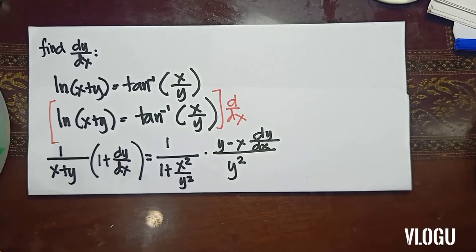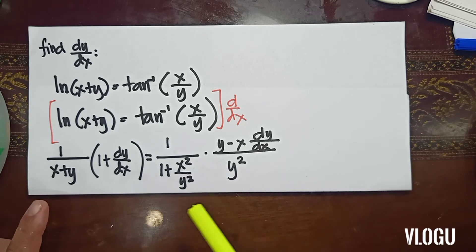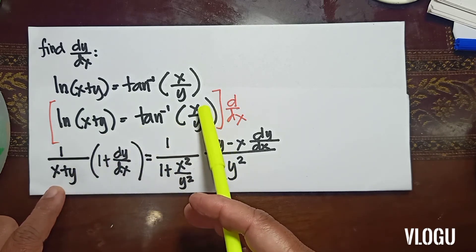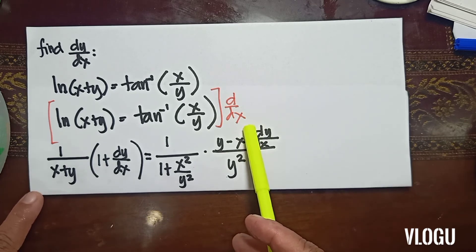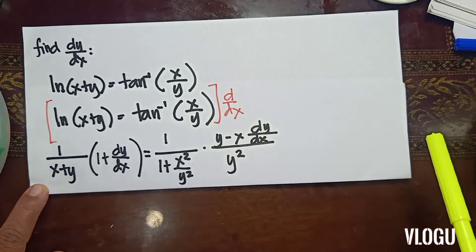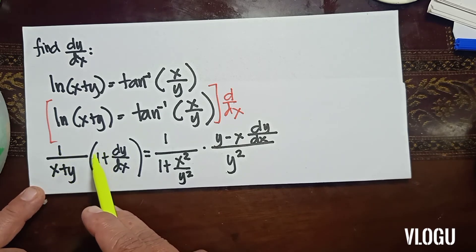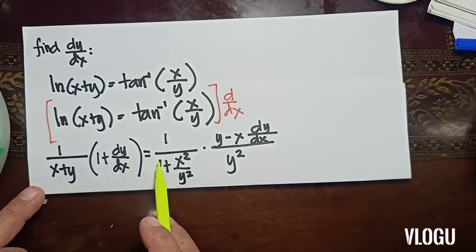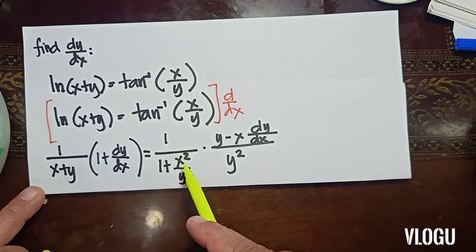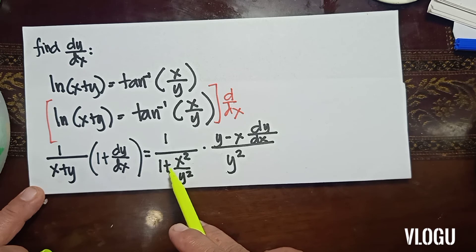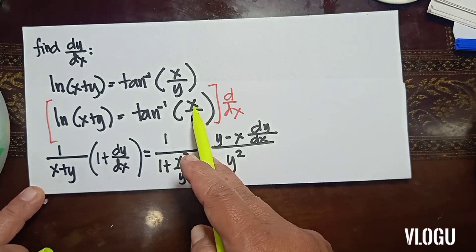The next problem: find the derivative of ln(x+y) equals tangent inverse of (x/y). To solve this, we find the derivative for both sides. The derivative of ln(x+y) — using the formula for ln(u) which is 1/u — gives 1 over (x+y), times the derivative of (x+y). The derivative of x is 1, and the derivative of y is dy/dx. On the right side, the derivative of tangent inverse gives 1 over 1 plus u squared, where u is x/y, so we have 1 over 1 plus x squared over y squared.